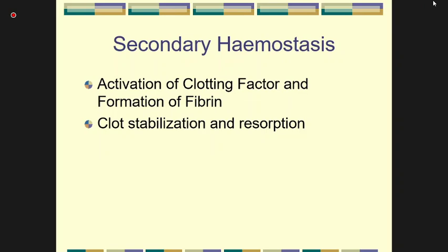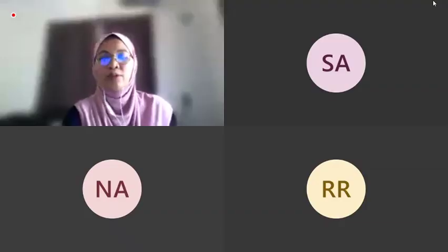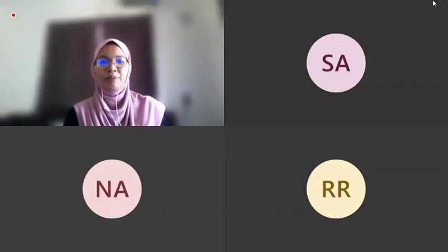Secondary hemostasis involves activation of the coagulation cascade, which results in the formation of insoluble fibrin. This fibrin stabilizes the platelet plug. This is followed by resorption through fibrinolysis.